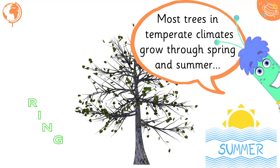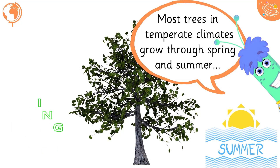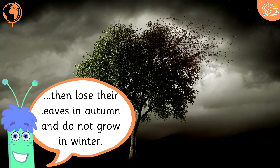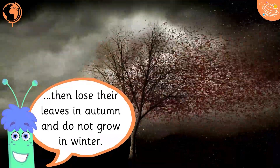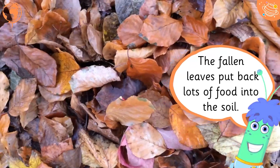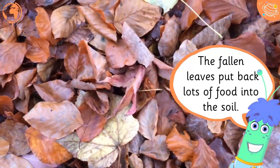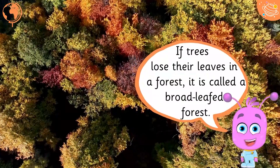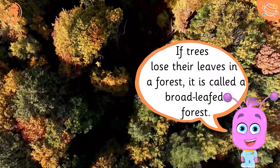Most trees in temperate climates grow through spring and summer, then lose their leaves in autumn and do not grow in winter. The fallen leaves put back lots of food into the soil. If trees lose their leaves in a forest, it is called a broad-leafed forest.